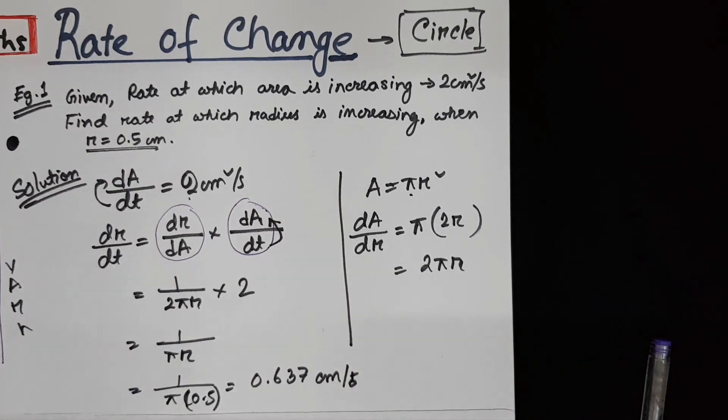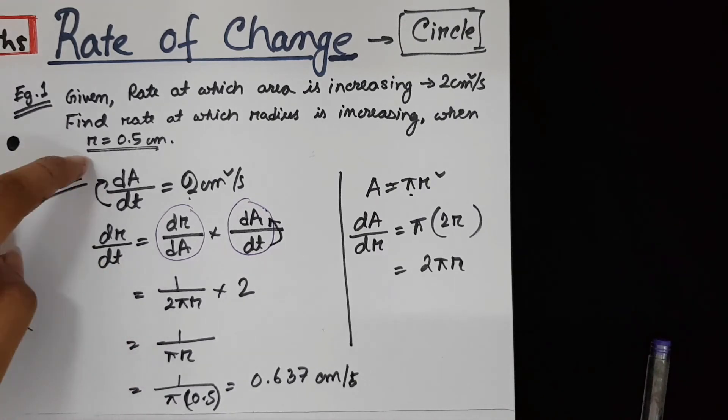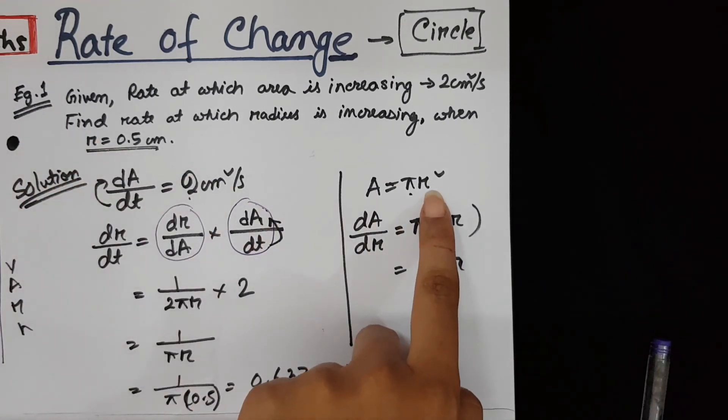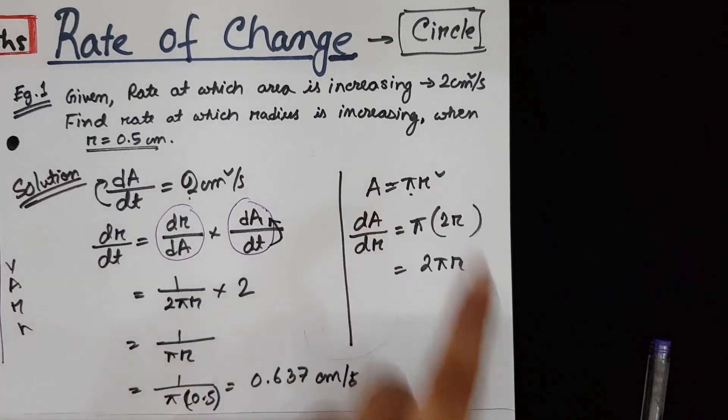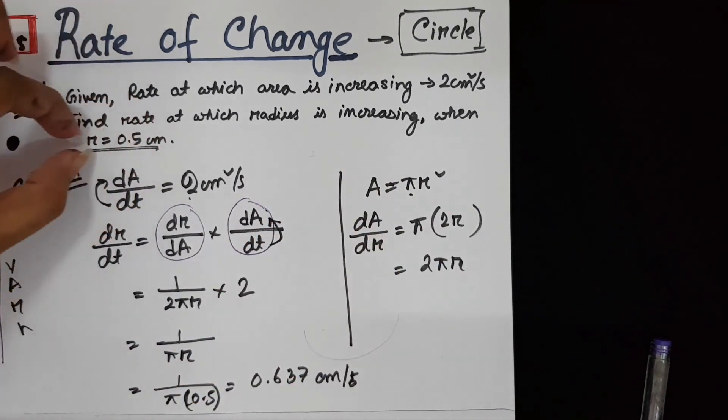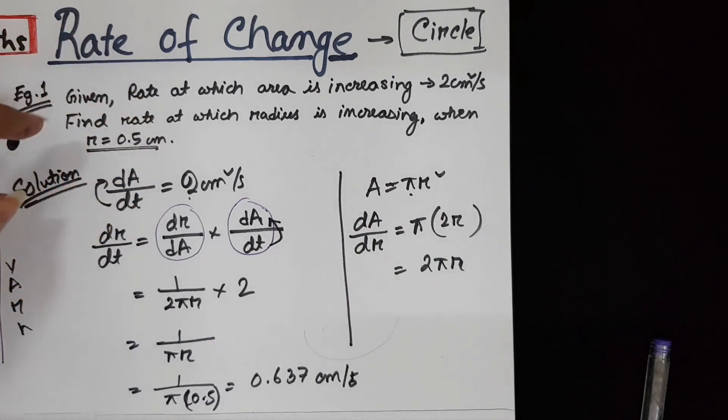Remember the value of r, the given value of r should be used at the end of the math. If you put the value of r here before differentiation, you won't be able to solve the math. The differentiation will become 0. So whatever the value they provide you, use that only at the end of the math.